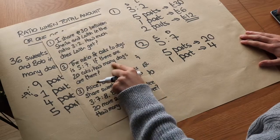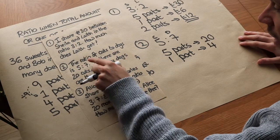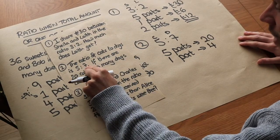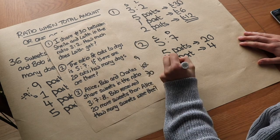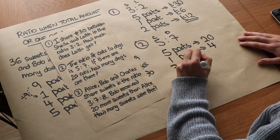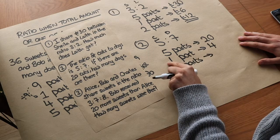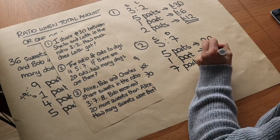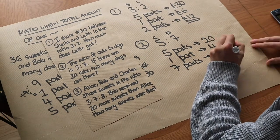We want to work out how many dogs there are. In this ratio, cats to dogs is 5 to 7, so it's 7 parts for dogs. We want to work out 7 parts, which is 7 times as much as 1 part: 4 times 7 is 28 dogs.